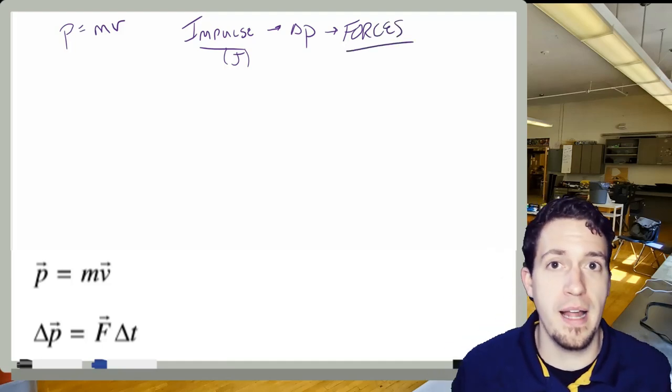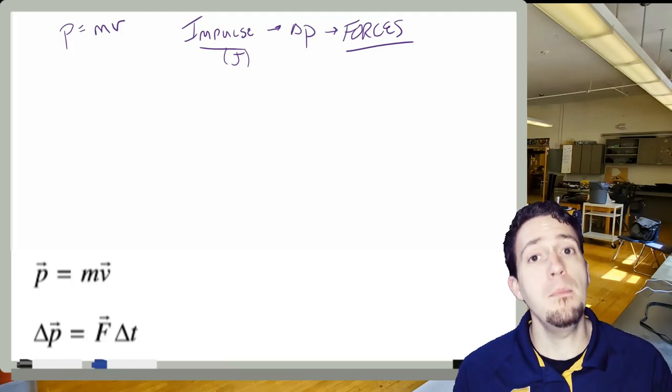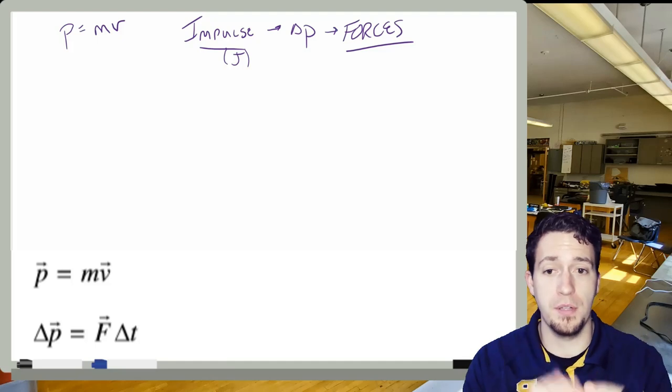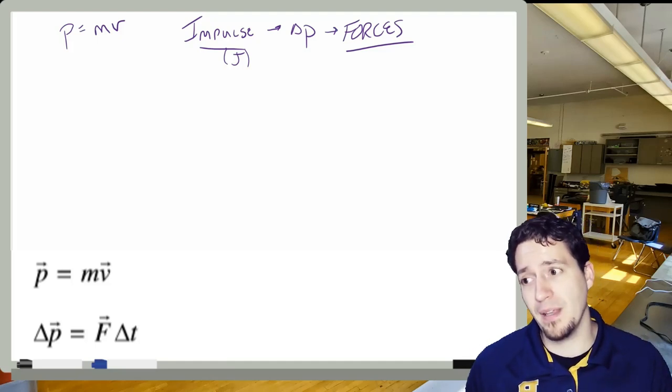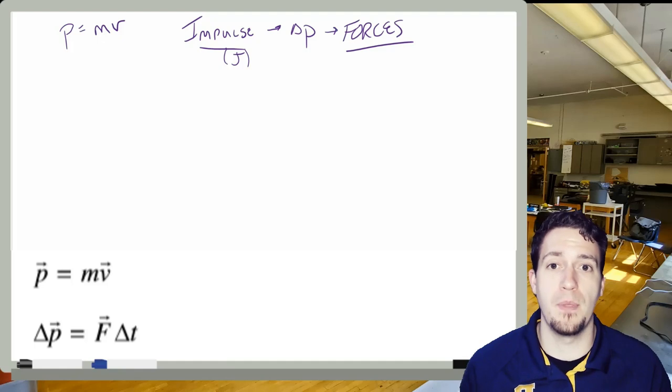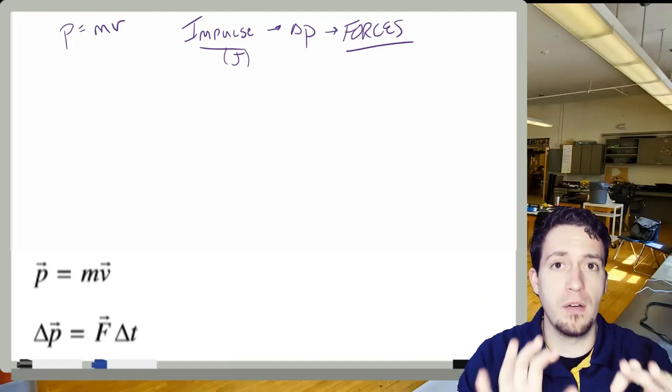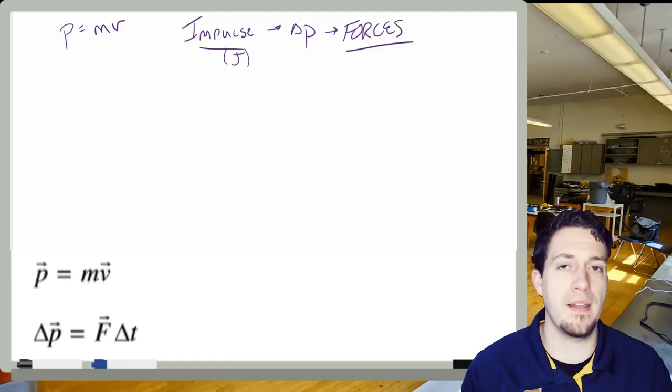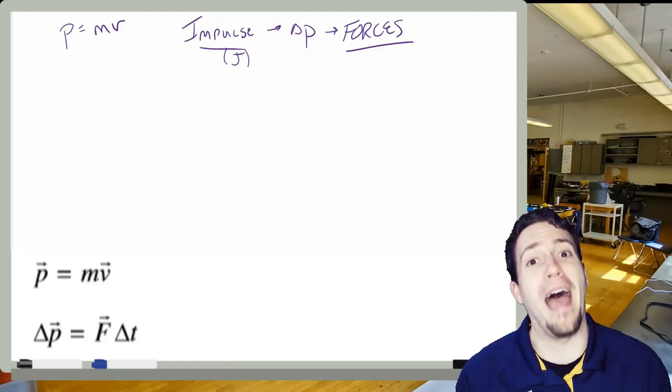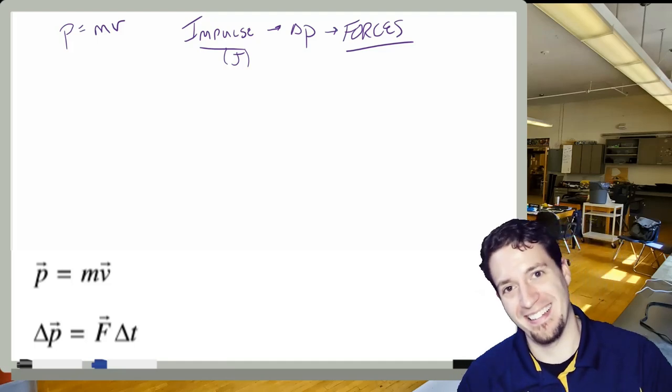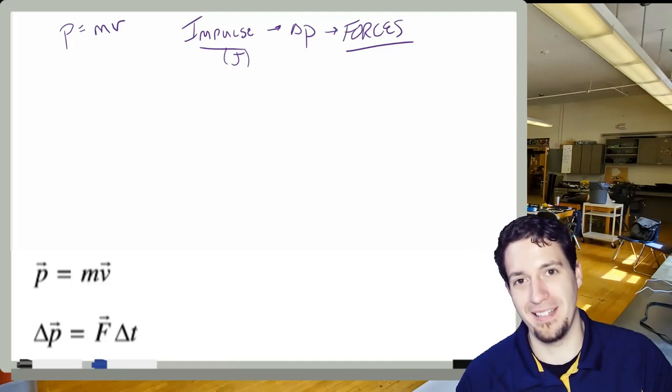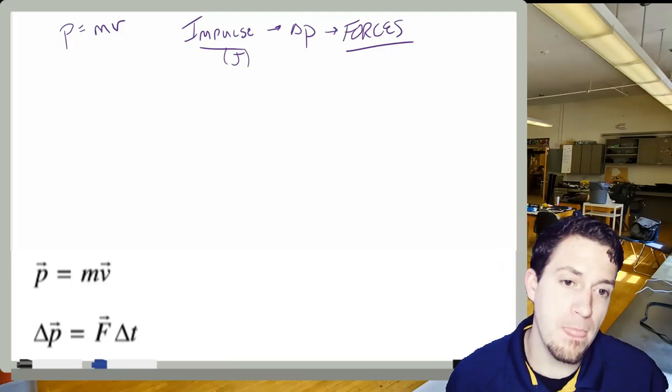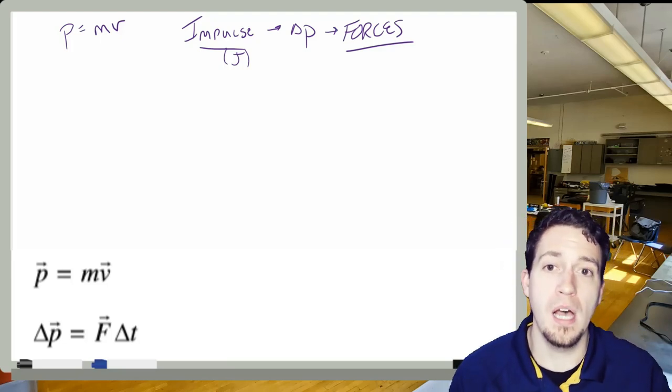Impulse officially for us is defined as a change in momentum. And impulse, of course, the symbol is capital J, which, you know, J for impulse makes perfect sense. Impulse is about a change in momentum. Now, how can we change momentum? Well, to change momentum, we'd have to change the velocity. And how can we change the velocity of something? You guessed it. Forces. So I'm going to have to apply a force to that object in order to get an impulse.